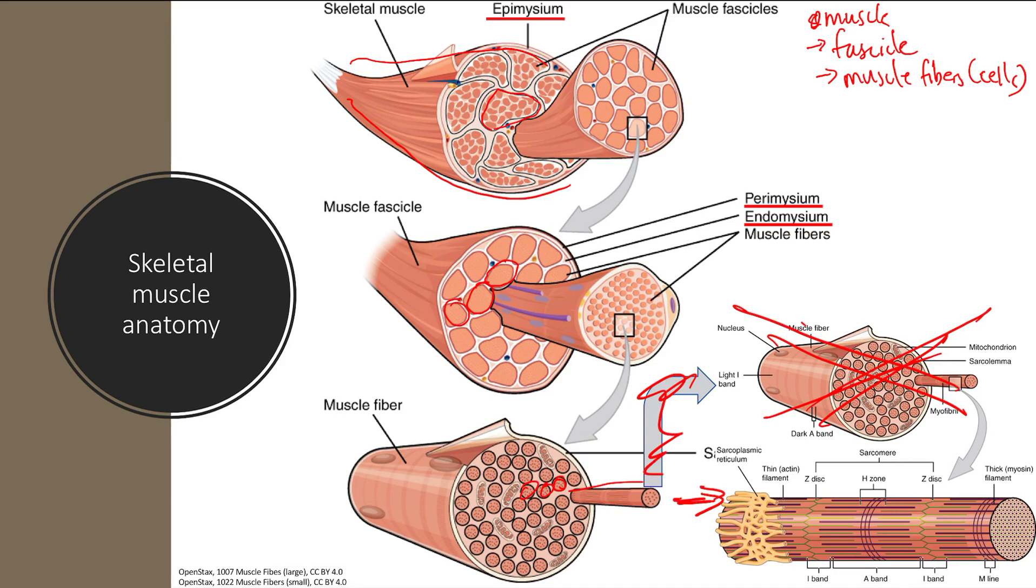Myofibril - this is one myofibril here. And a myofibril is made up of repeating units of something called sarcomeres. That's a sarcomere, that's a sarcomere. So that's the breakdown.